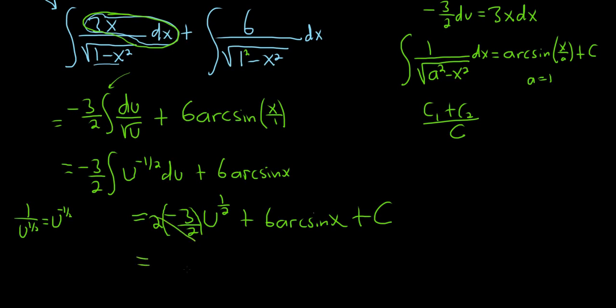These cancel, so we get negative 3, turn the u back into a square root. And what was this piece? Oh, this was 1 minus x squared, it's from the beginning, plus 6 arcsine x, plus c.